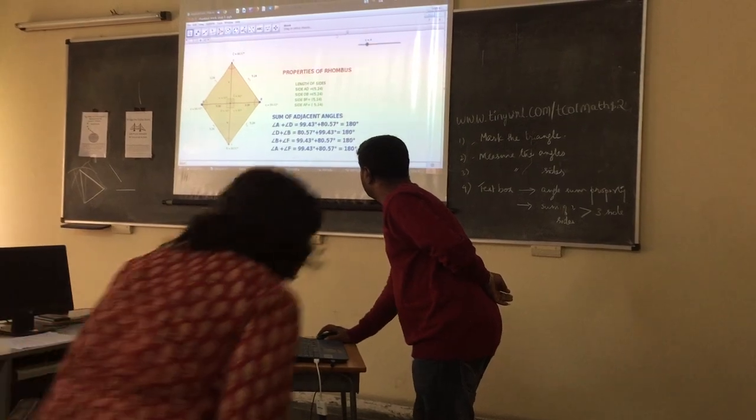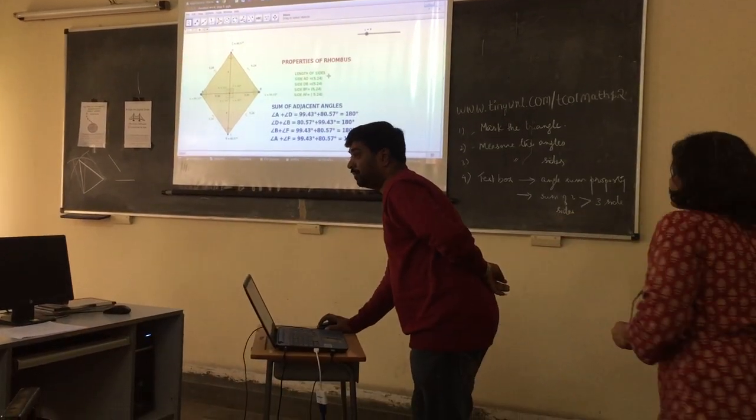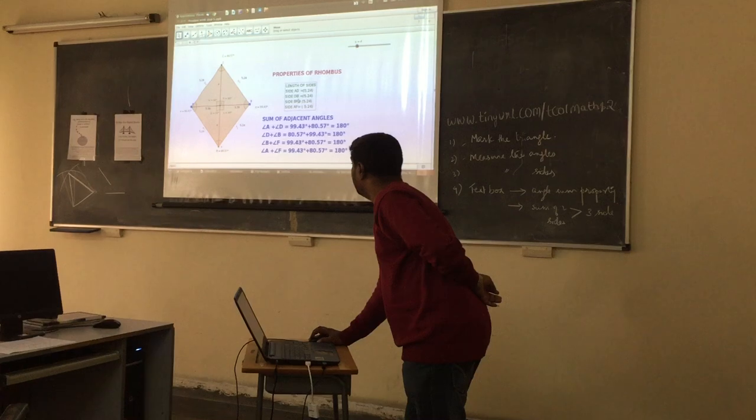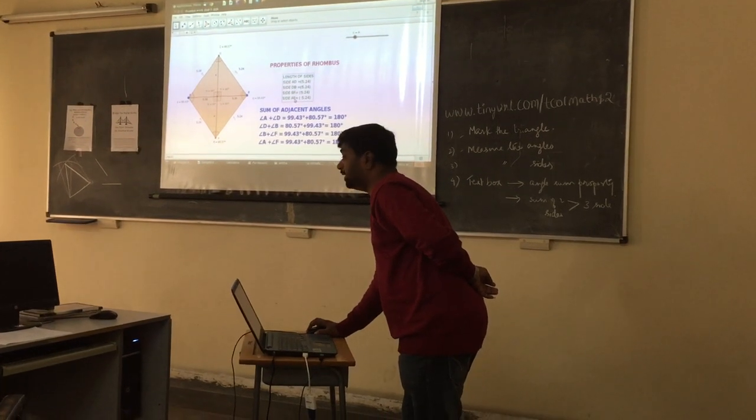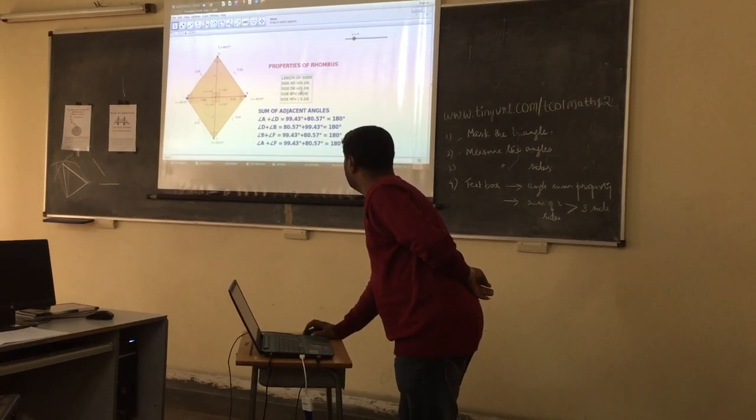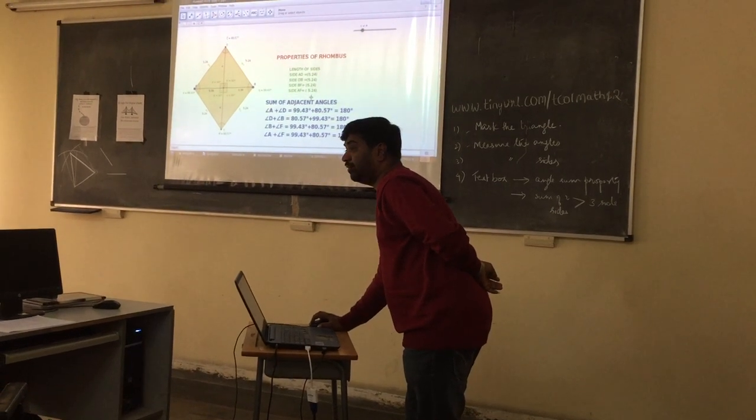So these are the length of the sides. So side A, side B, side B, and side A. So you can observe here all the four sides are equal.